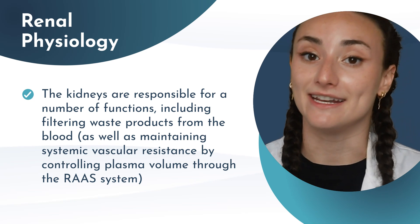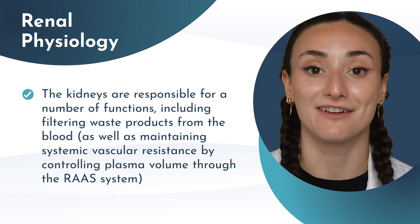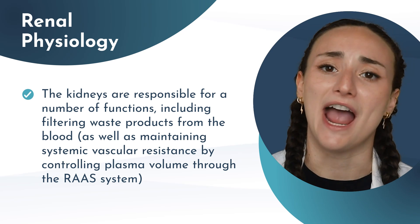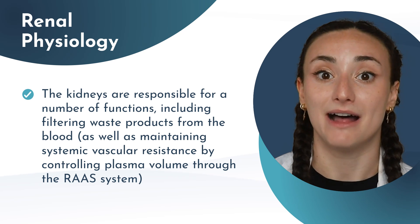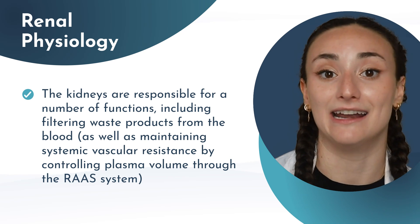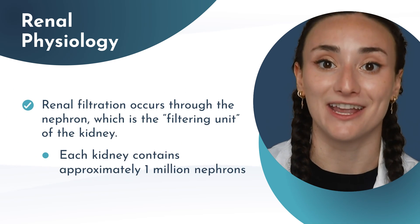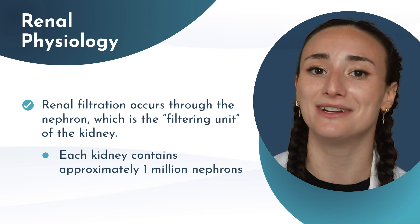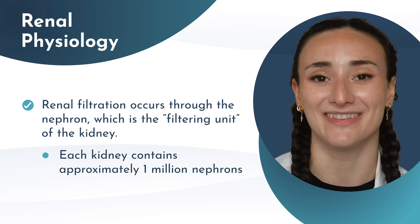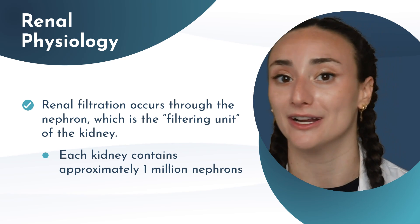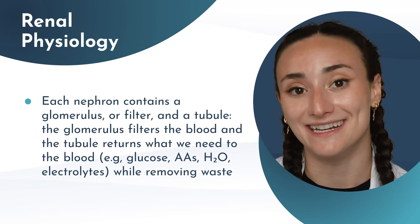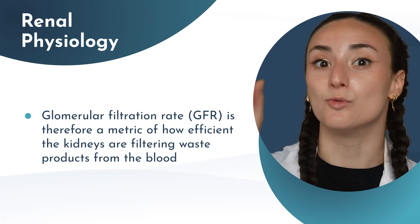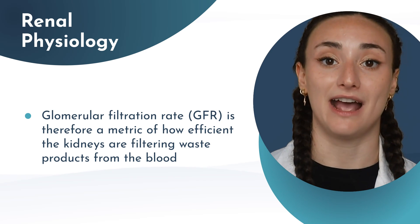The kidneys are crucial for filtering waste products out of the blood, including things like creatinine, and therefore any disruption to kidney function may lead to imbalances in creatinine and blood urea nitrogen. Each of our kidneys contains approximately one million tiny filtration units known as the nephron — that's where we get nephrology, referring to the practice of renal medicine. Within each of these nephrons is a tubule and the actual filter component known as the glomerulus.